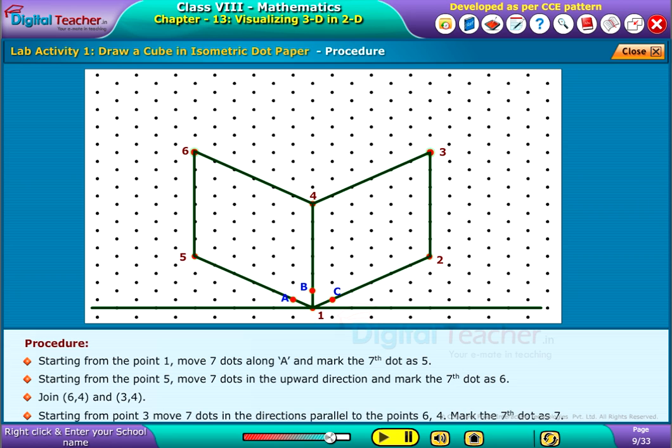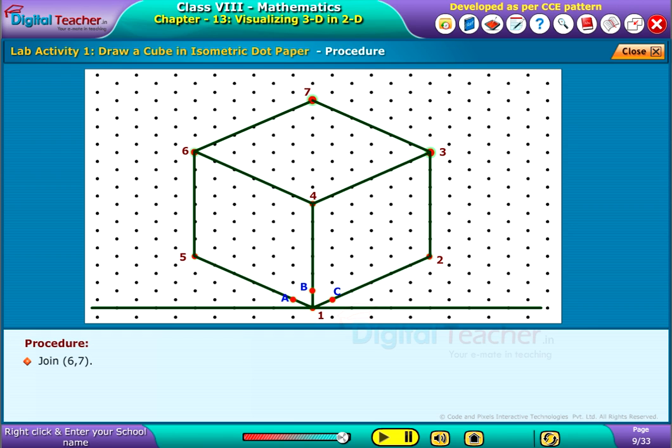Starting from point 3, move 7 dots in the direction parallel to the points 6, 4. Mark the 7th dot as 7. Join the points 6 and 7.